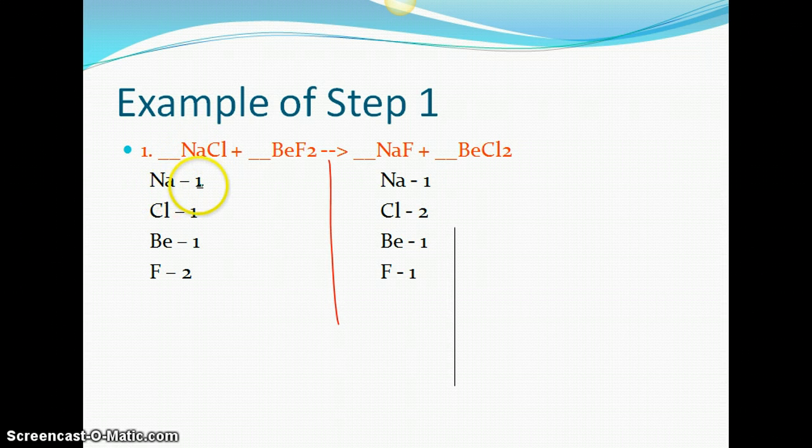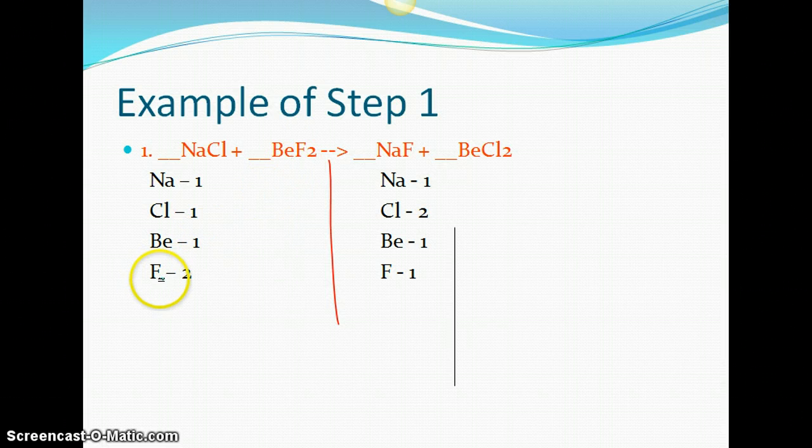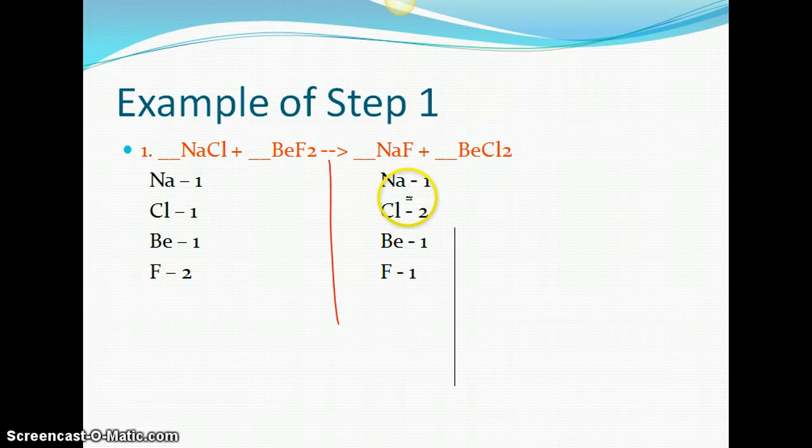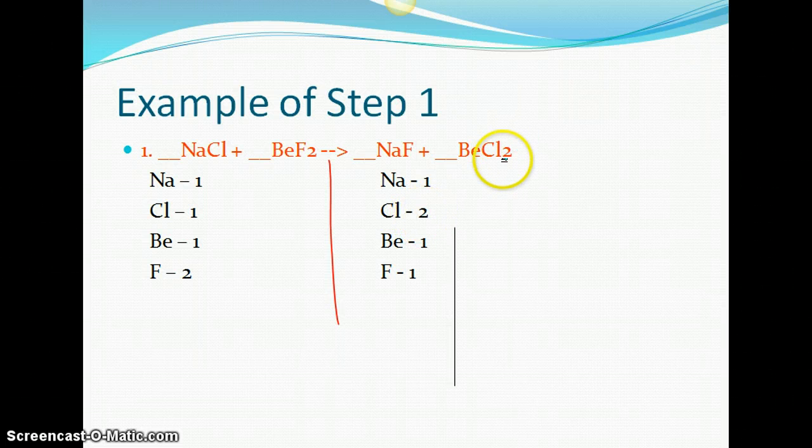Our first element is Na and we have one of those. We know there's one because there's no number here. If there were a number, we would put that number. But if we have no number, we assume that there's one. Chlorine, one. Beryllium, one. And fluorine, two. This two goes to that fluorine. On this side, Na is one. Fluorine is one. Beryllium is one. And chlorine is two. You see that two here.